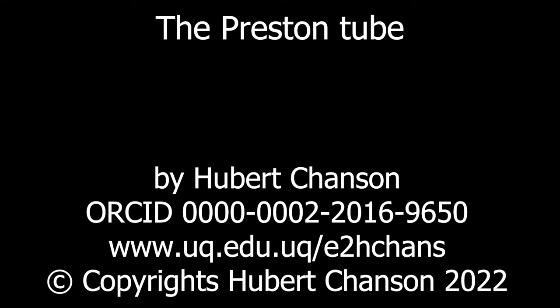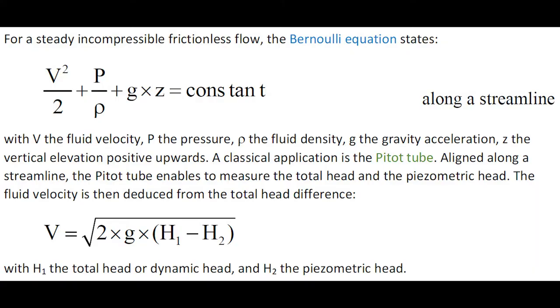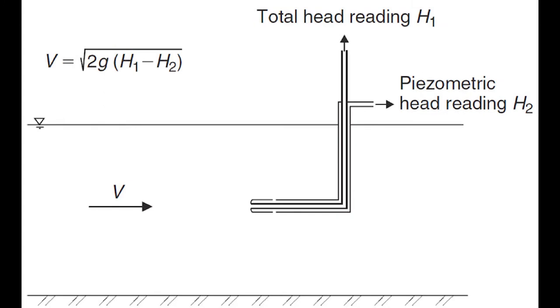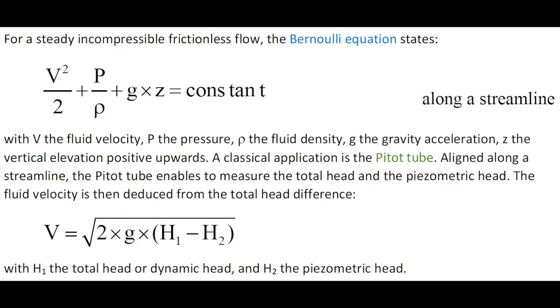For a steady incompressible frictionless flow, the Bernoulli equation may be applied on a streamline. A classical application is the Pitot tube. Outlined along a streamline, the Pitot tube enables measurement of the total head, the geometric head, and in turn, the fluid velocity.